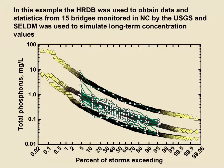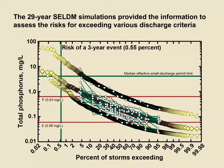This graph shows measured and simulated total phosphorus concentrations with a log scale on the vertical axis and a probability scale on the horizontal axis. The white circles connected by green lines are the measured bridge runoff samples from a study by the USGS in cooperation with the North Carolina DOT. The yellow symbols show the results of a 29-year simulation done using SELDOM with the minimum, median, and maximum of the bridge runoff statistics. When compared to the national dataset, the maximum geometric mean of these bridge sites exceeded more than 95% of all stations, the minimum geometric mean exceeded about 25% of national values, and the median was about equal to the national average geometric mean. Based on the local data and national values, we concluded it was most prudent to use the median of statistics to represent bridge runoff at unmonitored sites in North Carolina. The SELDOM simulations provided information to assess the risk for exceeding various discharge criteria.